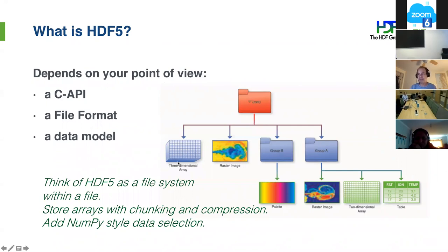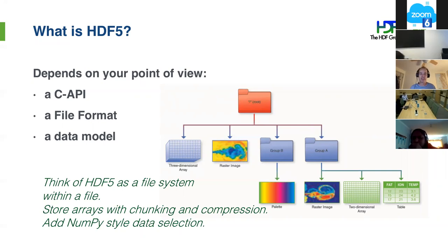That root group can contain a three-dimensional data array, a raster image, subgroups, a 2D array, a table, and so on. Each of these objects can have its own set of metadata — smaller pieces of data that describe the data. For example, for an experiment you may have data that says what time the data was collected. It's useful because in scientific fields you collect a lot of data but it's hard to keep it organized — it gets separated into different files and you lose track of what relates to what. With HDF5 you can keep it all together, and it's a binary format that supports compression, so it's much more efficient than using CSV files.